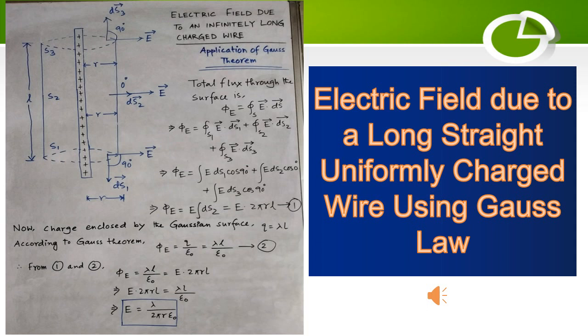In place of q, simply put the value lambda l, so E times 2πrl equals lambda l by epsilon_0. On both sides l will cancel out, so E times 2πr equals lambda by epsilon_0, giving E equals lambda by 2π epsilon_0 times r.